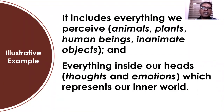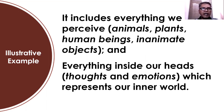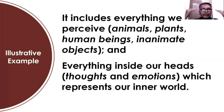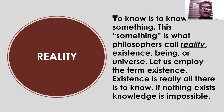Reality includes everything we perceive — everything that can be perceived by our five senses: animals, plants, human beings, living beings, inanimate objects, living things and non-living things. All that exist in this world, whether living or non-living, and everything inside our heads — our thoughts and emotions — which represent our inner world. Whether they can be perceived by our five senses or they represent our inner world, they are considered as reality, existence, being, or universe. We are continuously searching for knowledge because there is reality, and this reality consists of things existing in this universe.